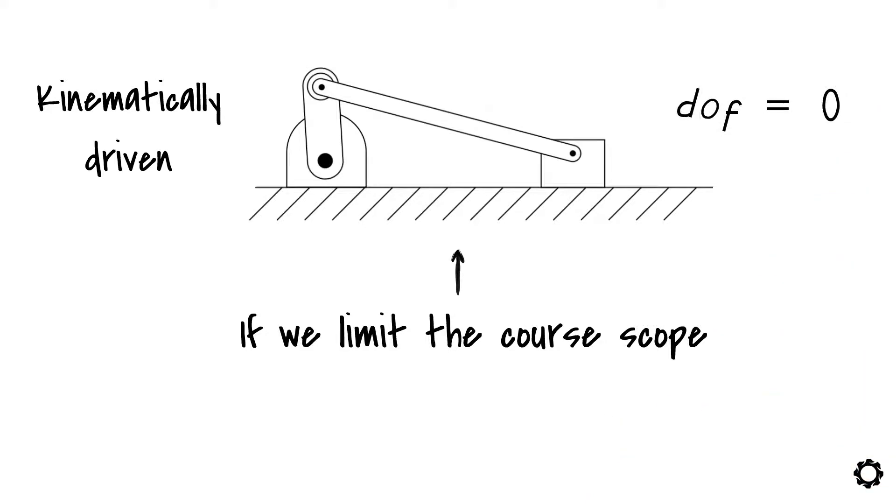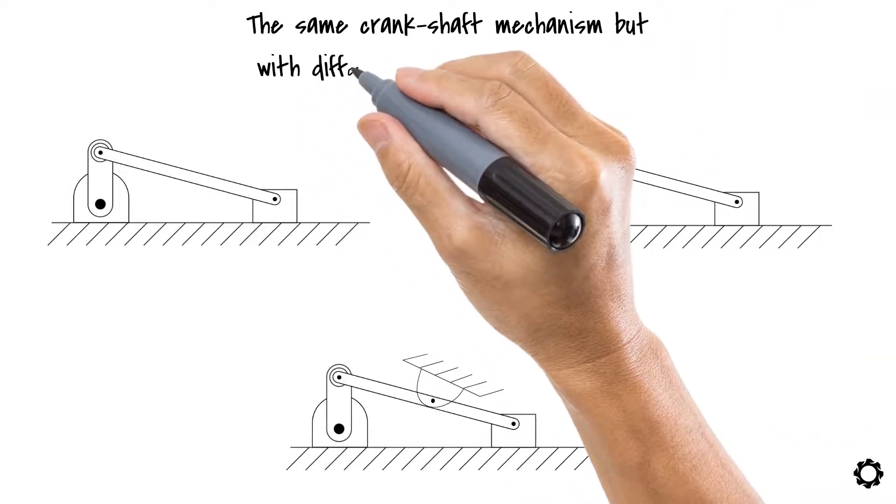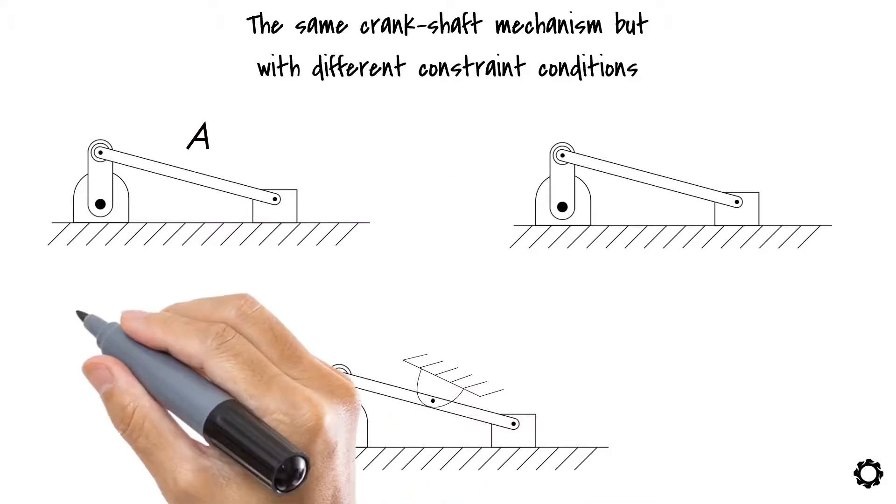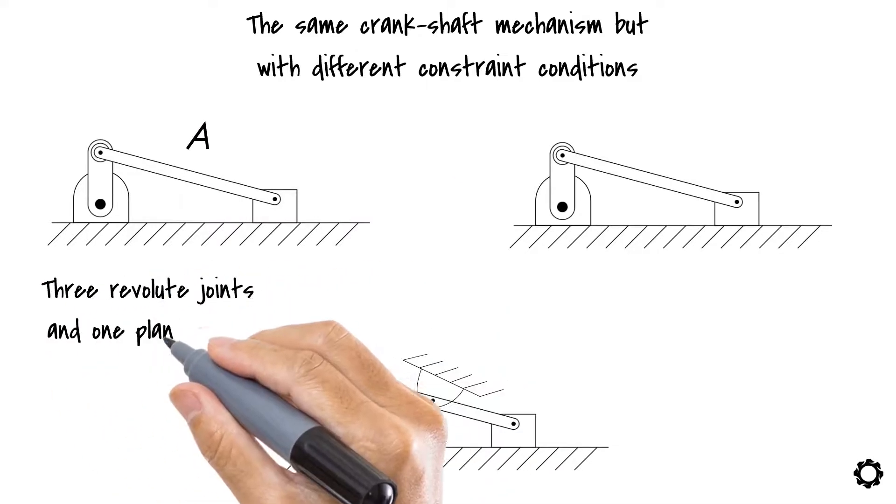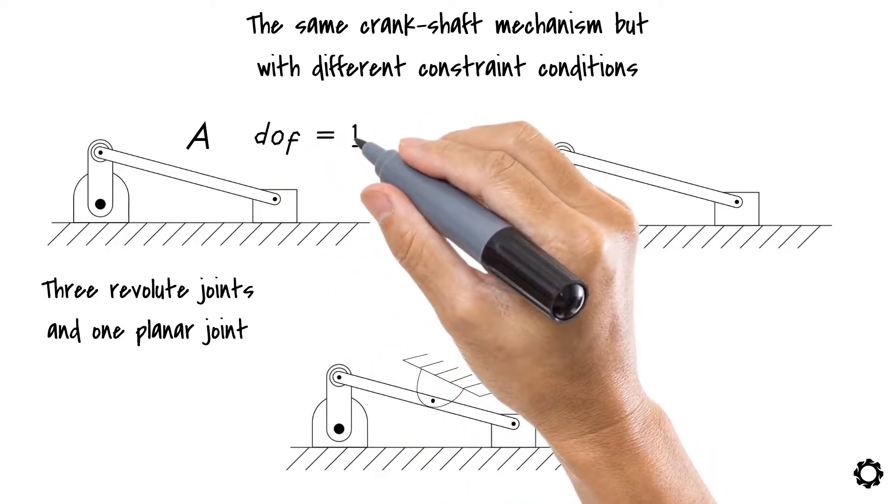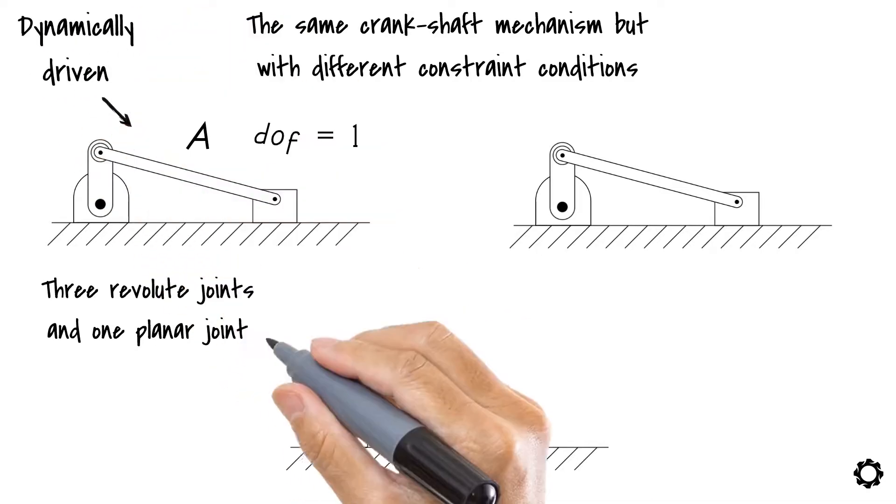Now that we took that out of the way, let us come back to our main topic. Let's bring in these three mechanisms. We have the same crankshaft mechanism but with different constrained conditions. The system A is a crankshaft mechanism with three revolute joints and one planar joint. If we remember correctly, the number of degrees of freedom of this system is one. This system fits into the category of a dynamically driven system.